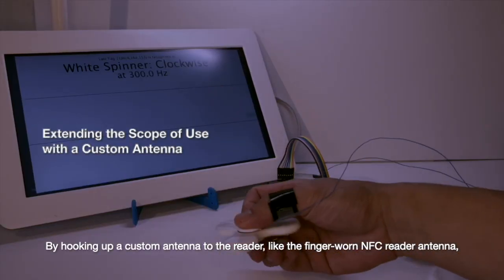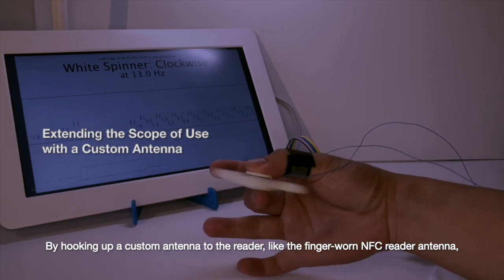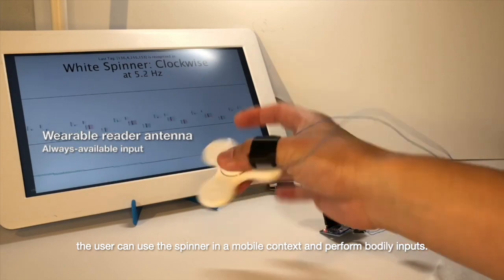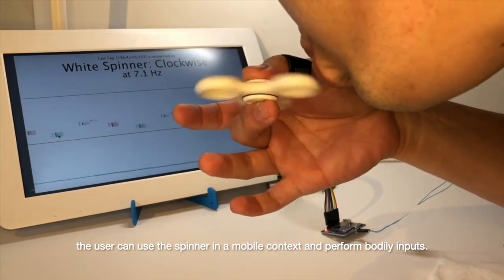By hooking up a custom antenna to the reader like the finger-worn NFC reader antenna, the user can use a spinner in a mobile context and perform bodily inputs.